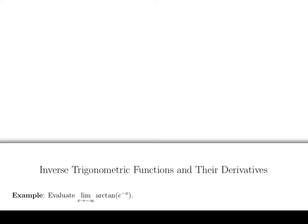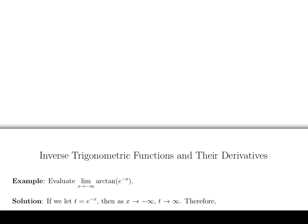So the way we'll approach this is we're going to make a substitution for the e to the negative x. Basically, we're going to create a new variable to help us with this limit. So we're going to let t be equal to e to the minus x.